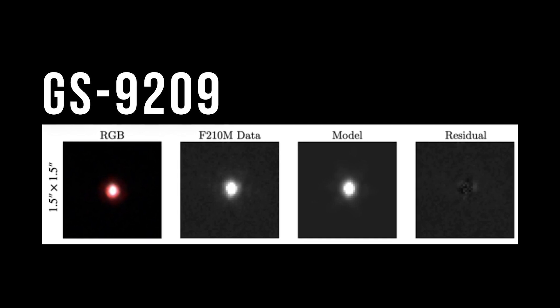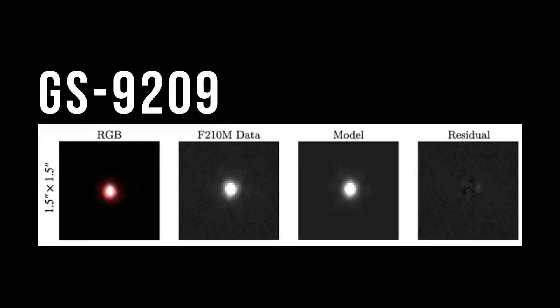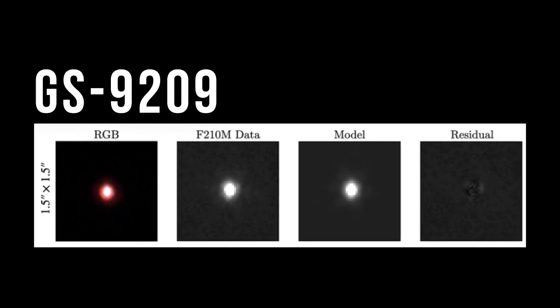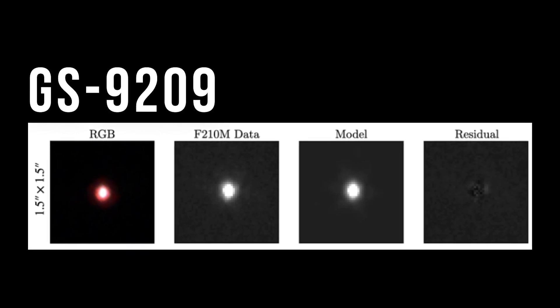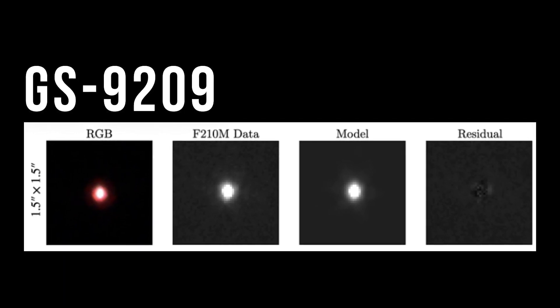The galaxy in question, GS9209, was first spotted in the early 2000s and was recently identified as a possible quenched galaxy based on the wavelengths of light it emits.